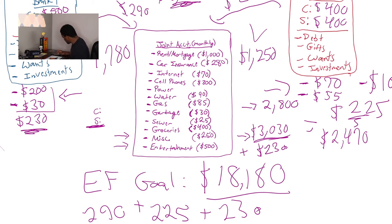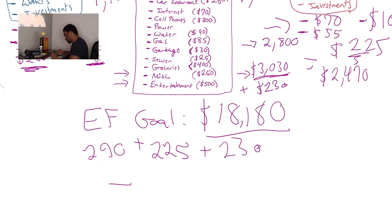Let's add that up. That means together, on average now, because obviously there's going to be some fluctuations, but on average, they're putting in an extra $745 into their joint account.